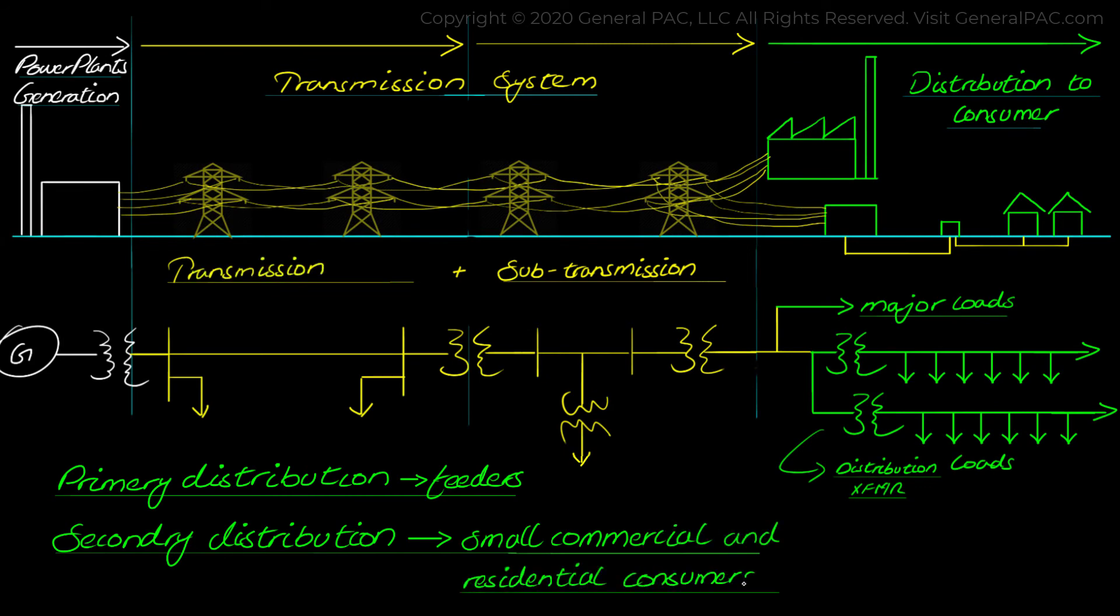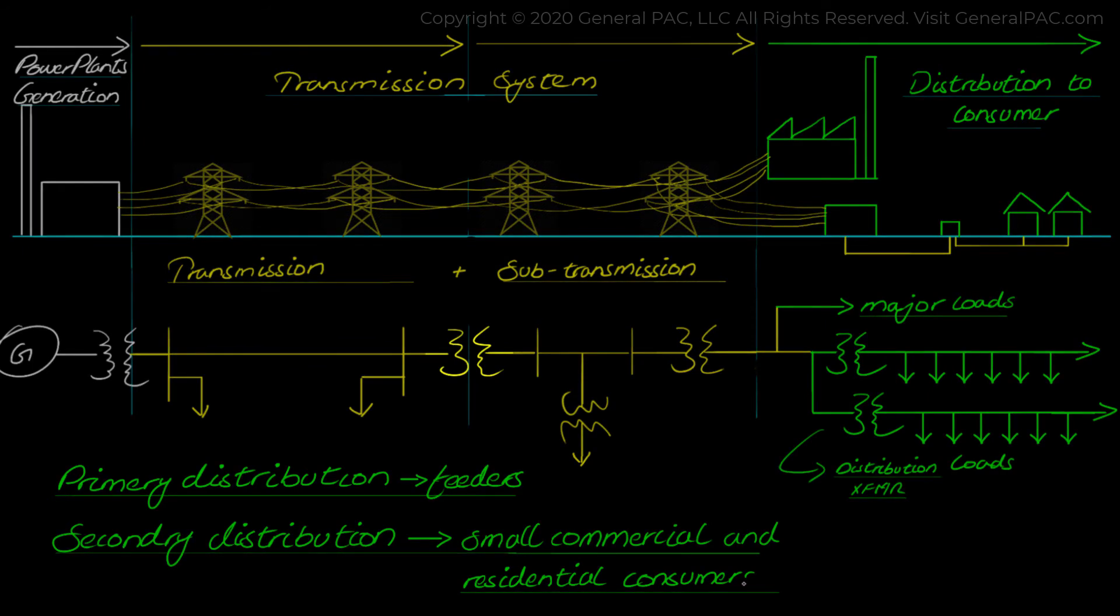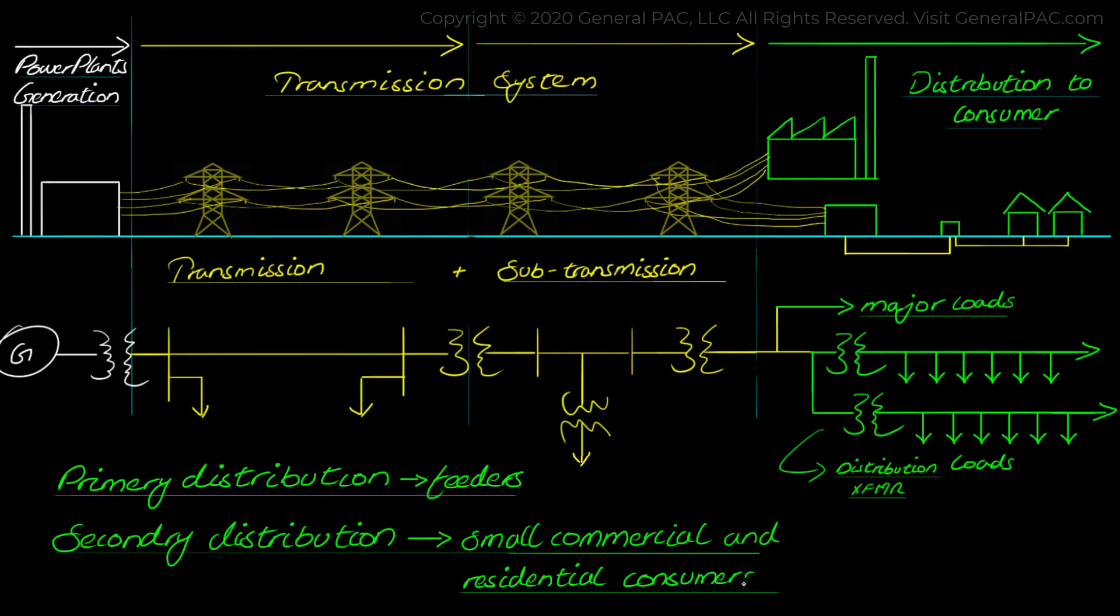Here you can see that power must travel through different lines and between two major segments of lines we have substations. Now substations change the voltage at the junction of two segments. We will define the division of transmission and distribution system based on these voltage levels in our next video.